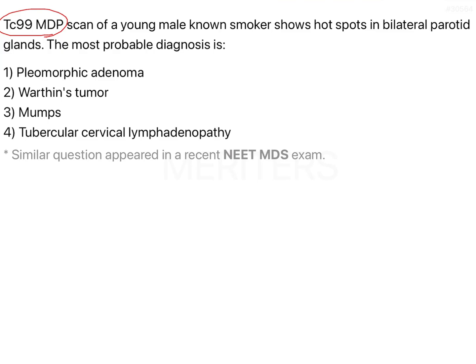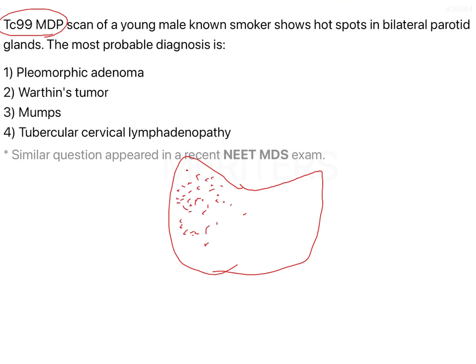This was also asked in NEET MDS 2021, where an image of the thyroid gland was shown with a complete black spot. For the thyroid, instead of phosphorus, radioiodine (RAI) is used — it is an isotope of iodine. The technetium scan visualizes radio isotopes and gives a complete picture of which part of the gland has taken up the isotope. These scans are black and white; the dark areas represent uptake.